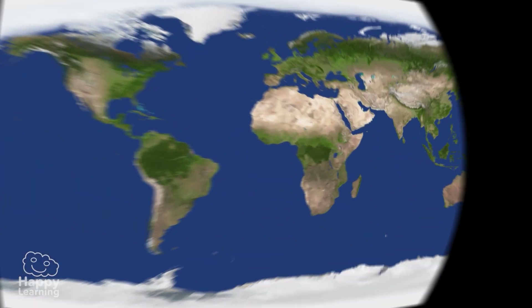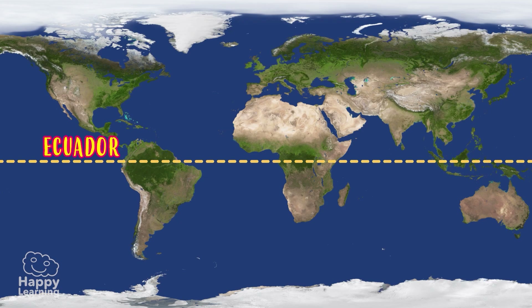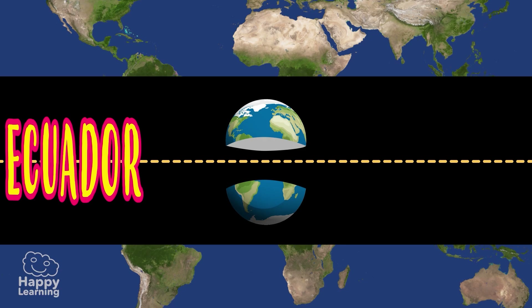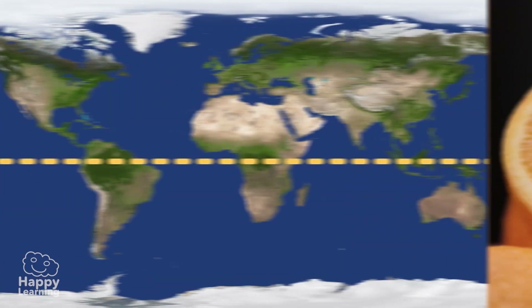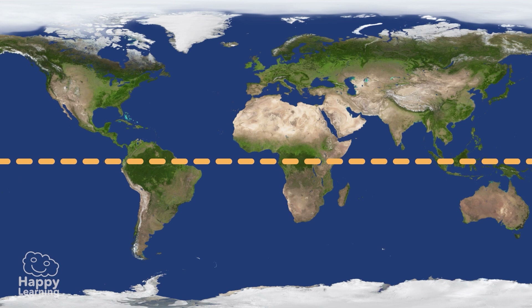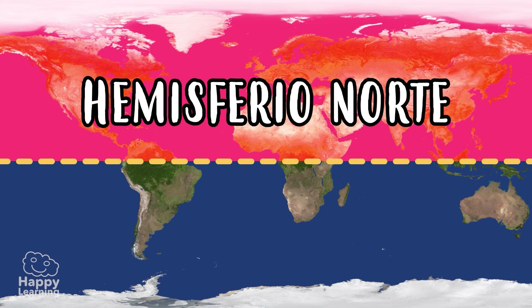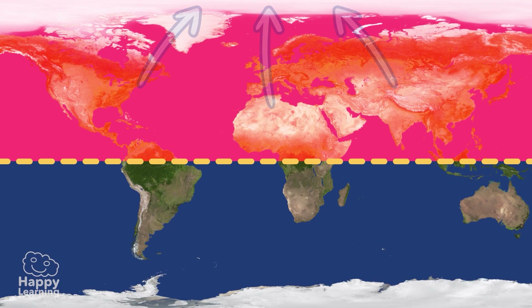El ecuador, además de un país, es una línea imaginaria que divide la Tierra horizontalmente justo por la mitad, como si partiésemos una naranja. Todo lo que queda de la línea del ecuador hacia arriba es el hemisferio norte, y su punto más alejado es el polo norte, donde viven los osos polares.